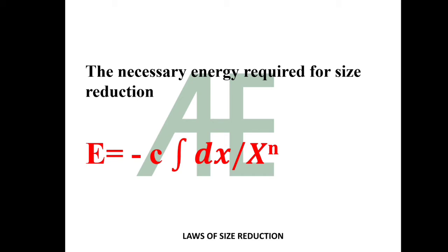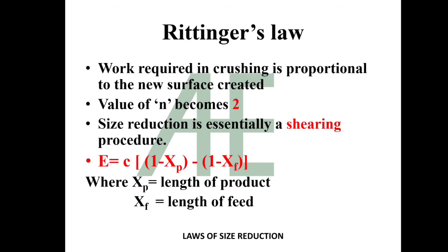Rittinger's law states that work required in crushing is proportional to the new surface created. Value of n becomes two. Size reduction is essentially a shearing procedure. So Rittinger's law is E equals c in bracket one upon xp minus one upon xf, where xp is length of product and xf is length of feed.